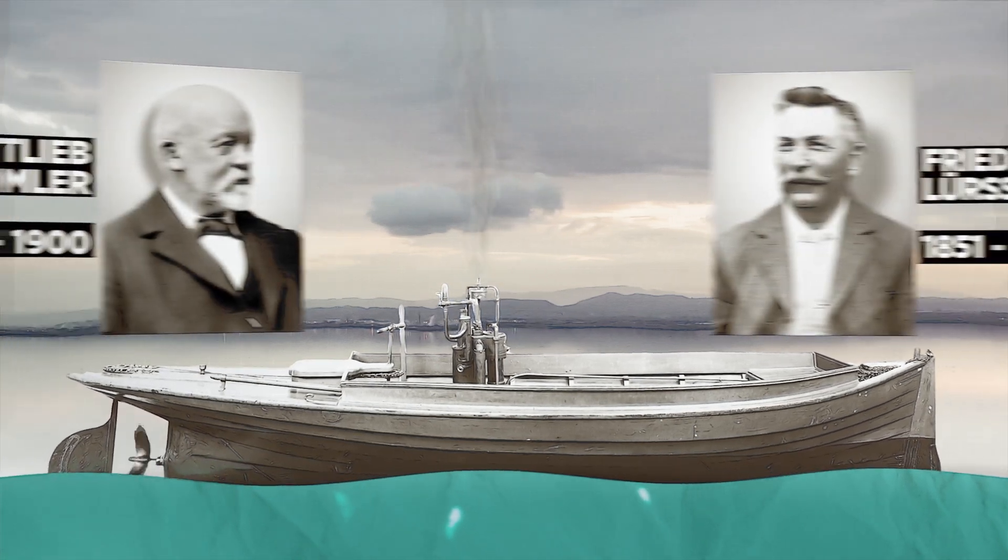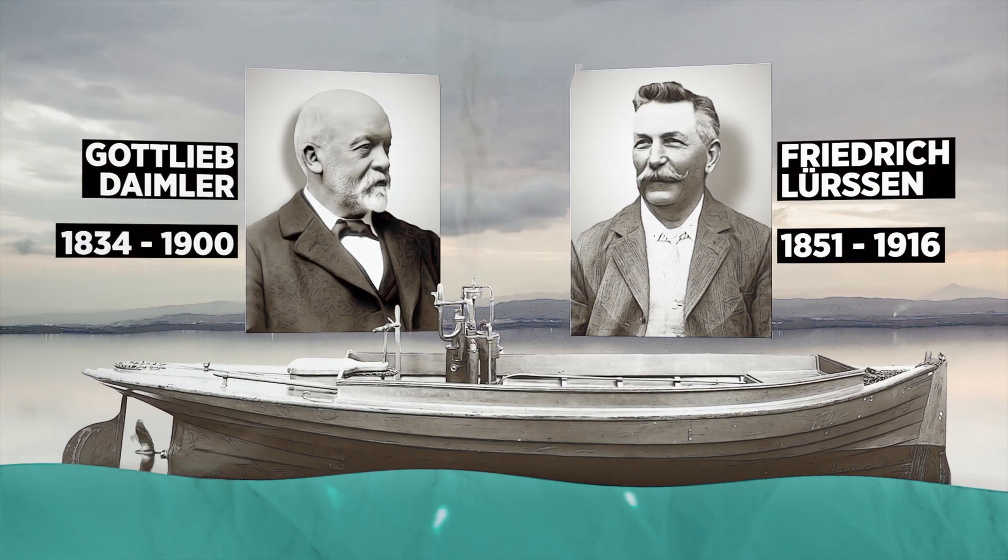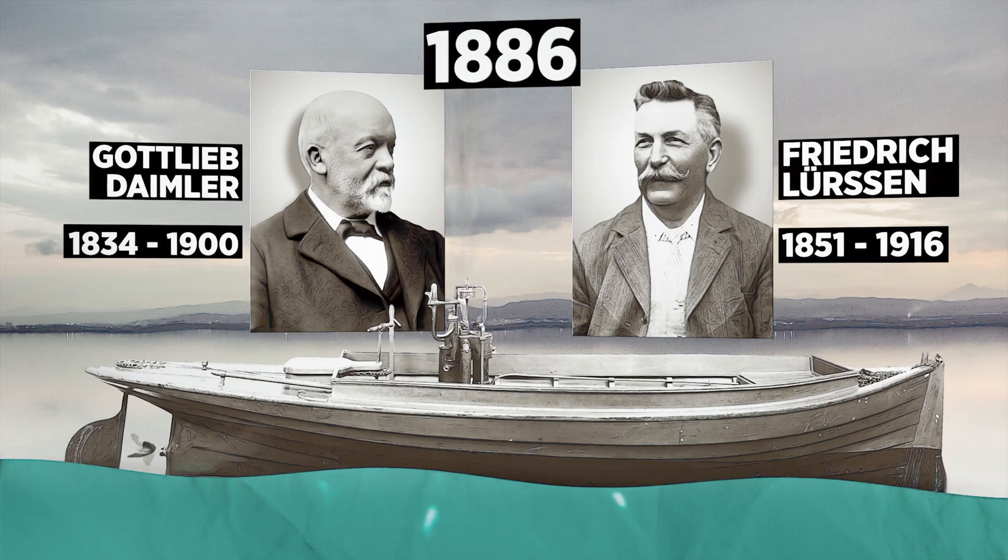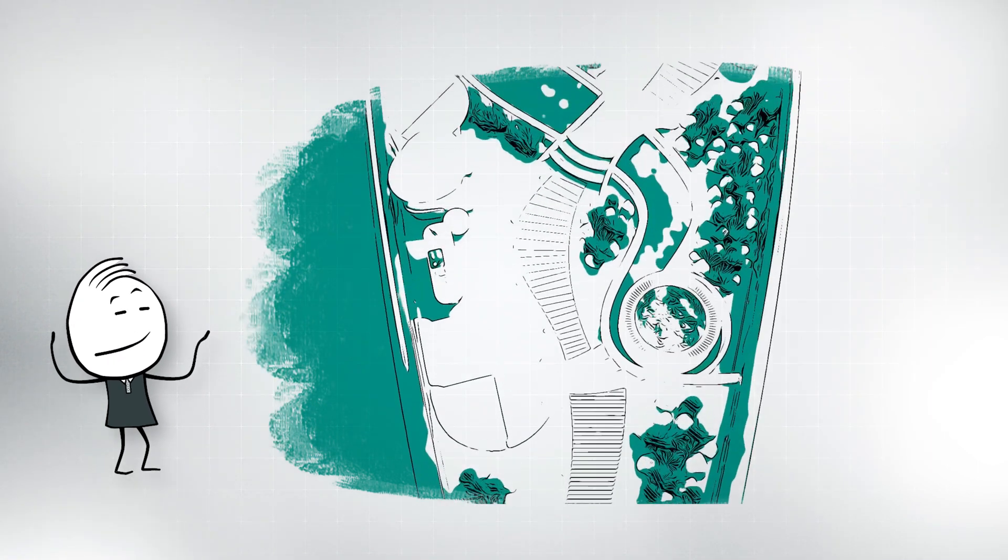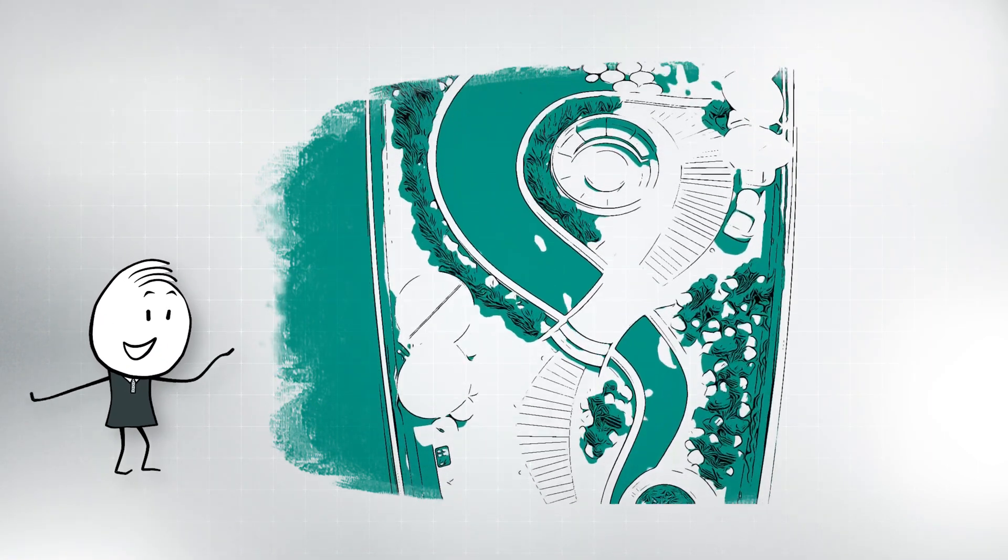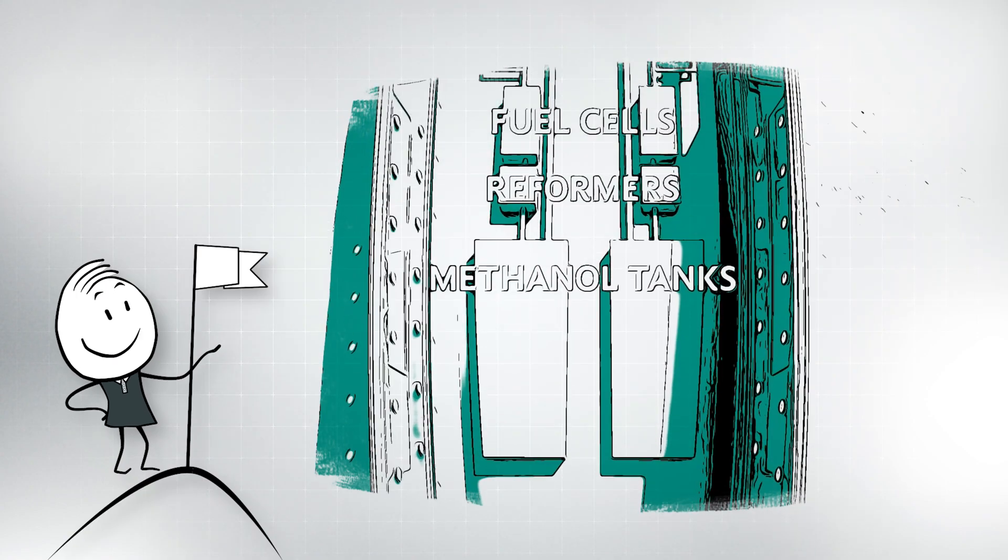In 1886, Lürssen built the world's first motorboat together with Gottlieb Daimler. It is therefore not surprising that Lürssen is now also building the first Lürssen yacht with fuel cell technology for a pioneering and technology-driven client.